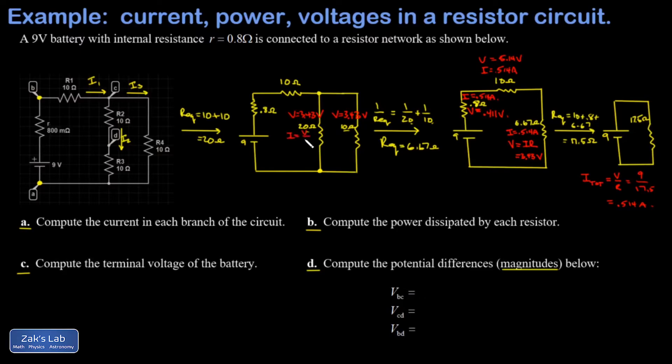I is V over R. 3.43 over 20 and that's 0.172 amps. I do the same thing here. I equals V over R. And that's 3.43 volts over 10 or 0.343 amps.